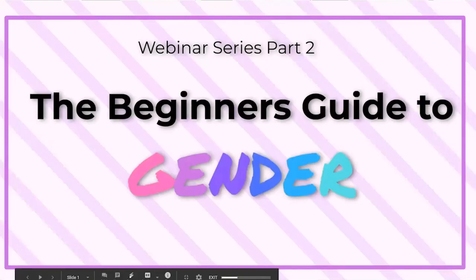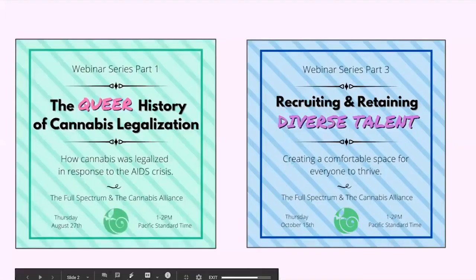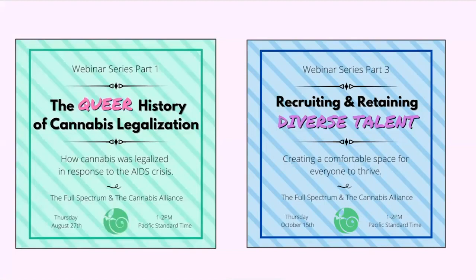Here we are in the beginning of part two of our three-part webinar series with the Cannabis Alliance. Today we're talking about the Beginner's Guide to Gender. In part one, which is on the Cannabis Alliance's YouTube already, we did the Queer History of Cannabis Legalization. In about a month on October 15th, we're going to be doing part three, which will be on recruiting and retaining diverse talent — creating a comfortable space for everyone to thrive in the industry.